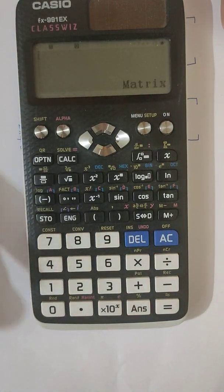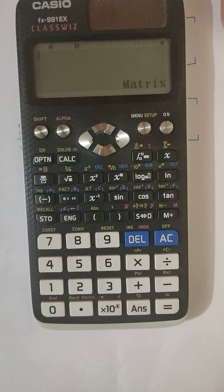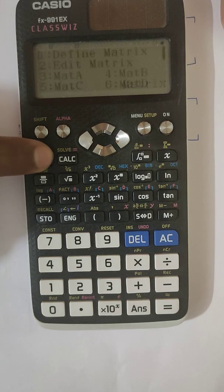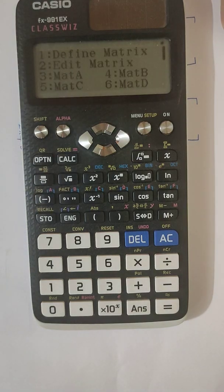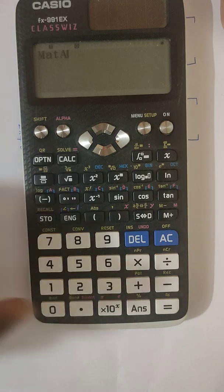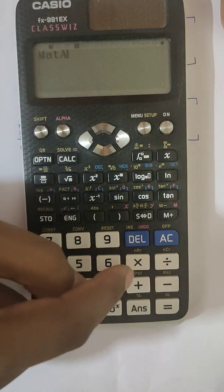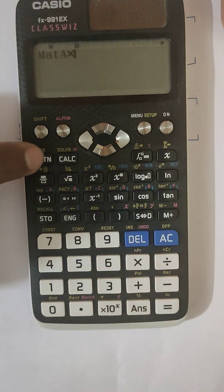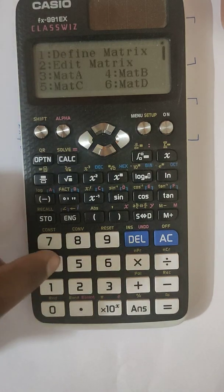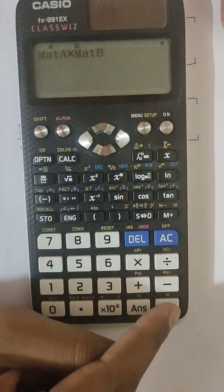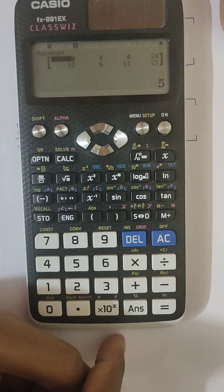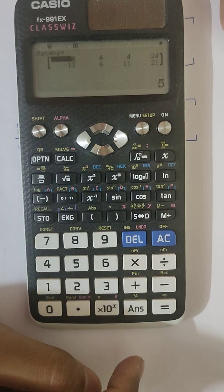Now we can perform the multiplication. So for multiplication you can press on option. Mat A is at number 3. Now as we want multiplication, so you can put this multiplication sign over here, and then again go for option. Now mat B is at 4, so 4, and now you can press on equal to.